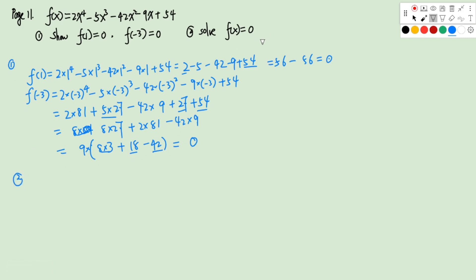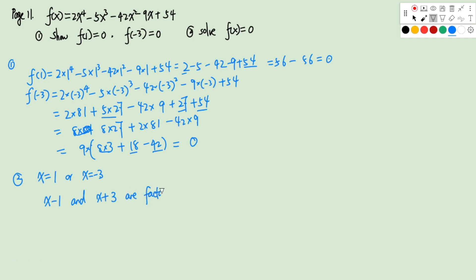Part 2: solve f(x) = 0. Since f(1) = 0 and f(-3) = 0, we know x = 1 and x = -3 are solutions. Therefore x - 1 and x + 3 are factors of f(x). We can write f(x) = (x - 1)(x + 3)(ax² + bx + c).